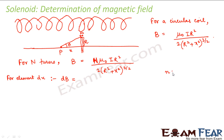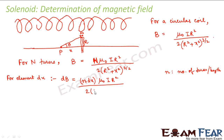Let small n be the number of turns per unit length. The number of turns in the length dx will be n·dx — that is, number of turns per unit length multiplied by the length dx. So dB equals n·dx · μ₀iR² divided by 2 into (R² + x²) to the power 3/2. Let us call this equation 1.